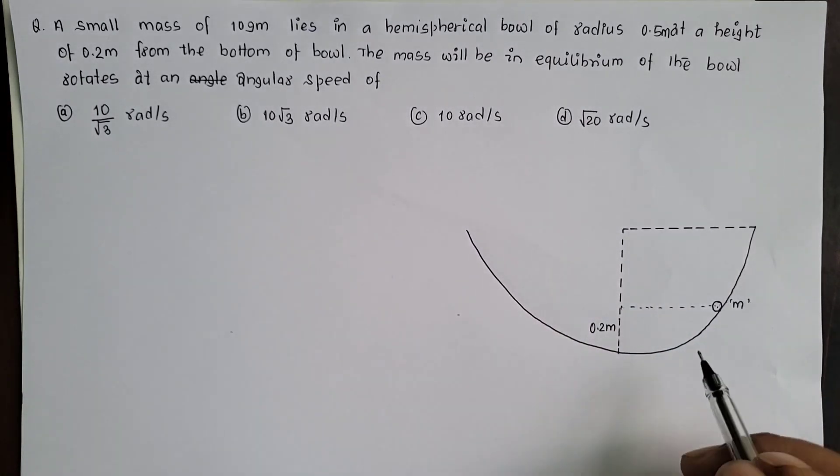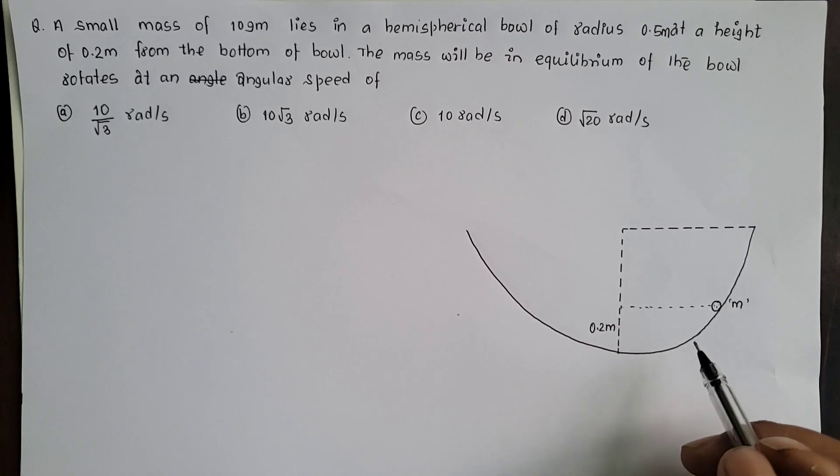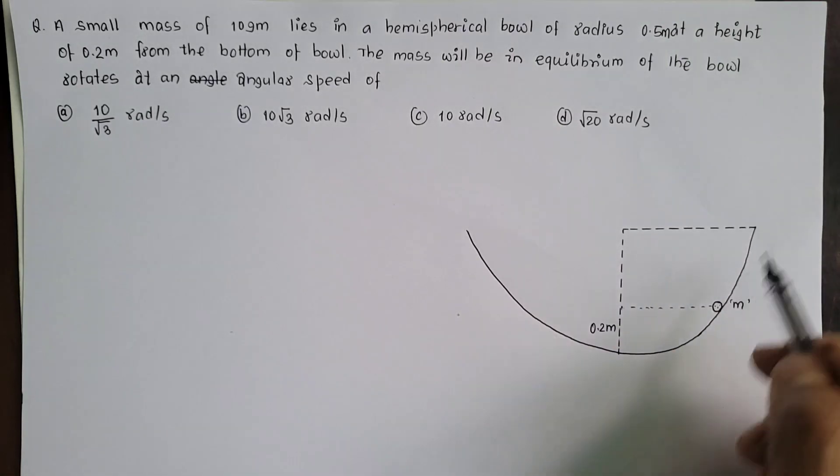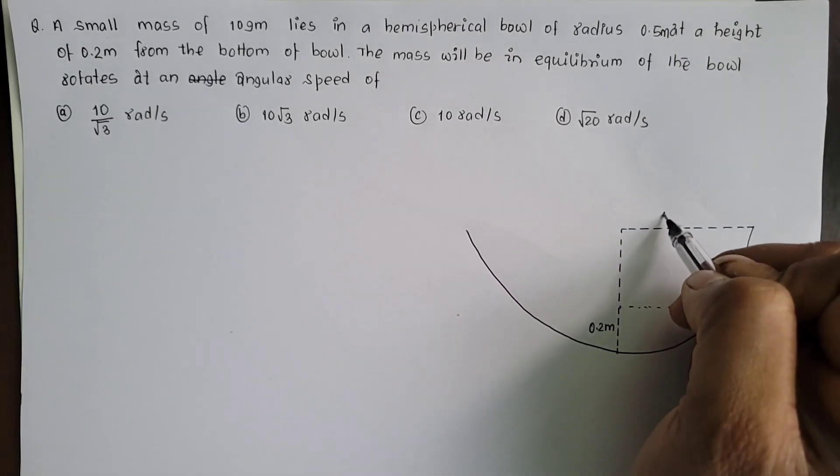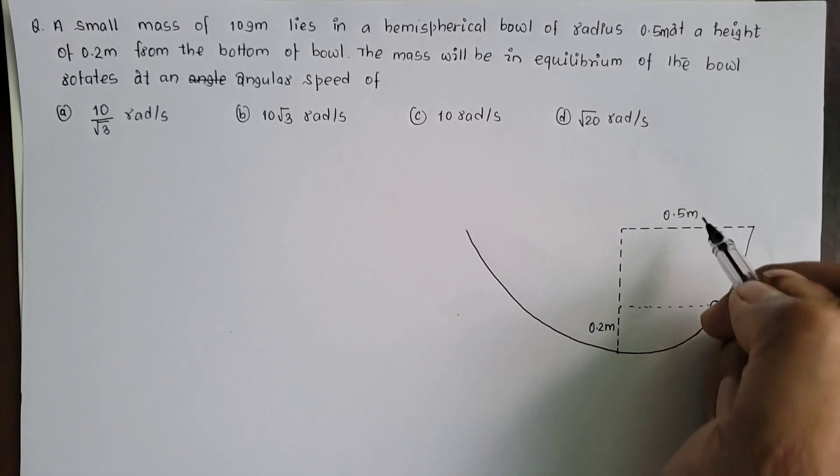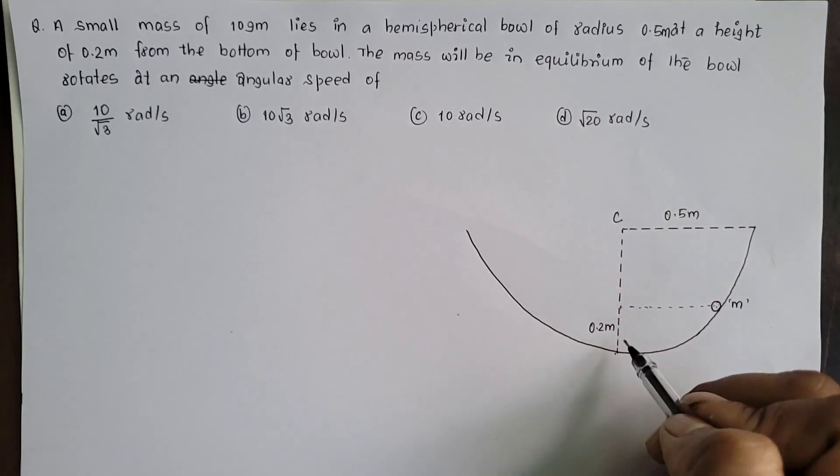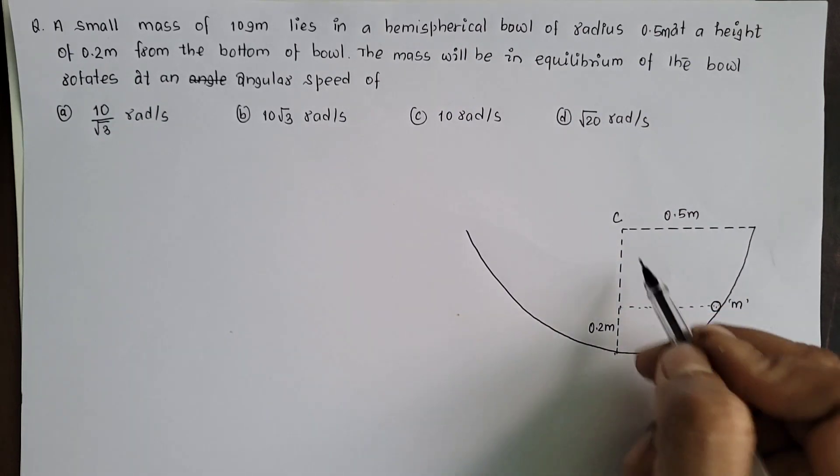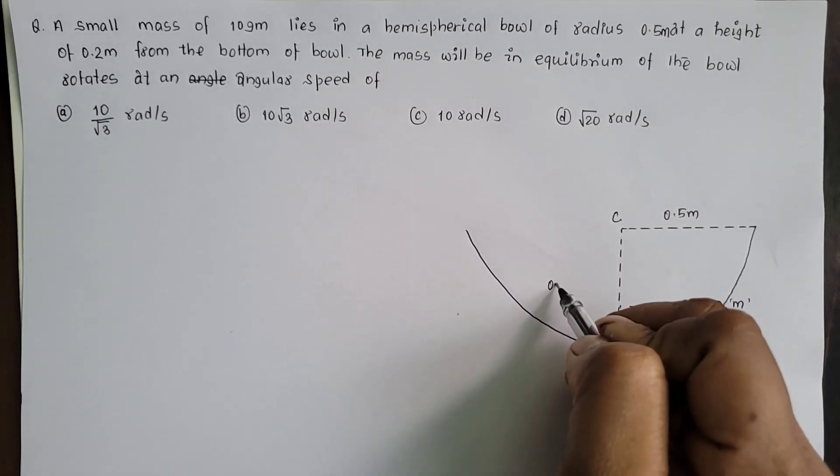Ina hemispherical bowl of radius 0.5 meter. Yujjun bowl dhegusa, isko radius sa 0.5 meter. Center lai C saapos garaeum, and center dekhhi bottom saapani radius na yoncha 0.5 meter.